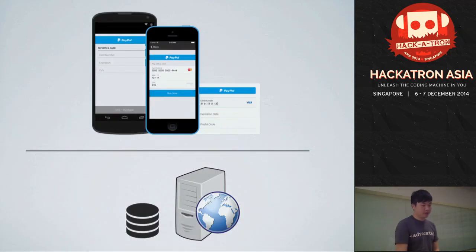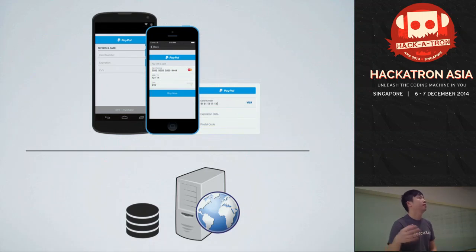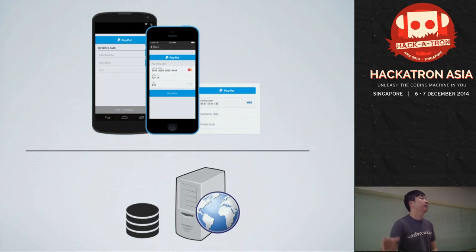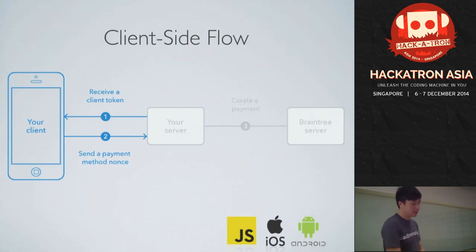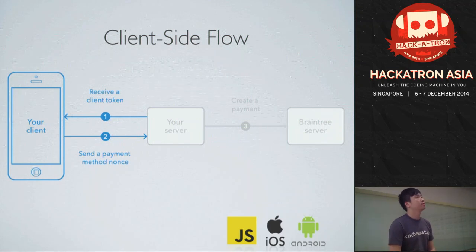You need a client application for your users and a server application to serve the client token, as well as execute actual transactions — sending transaction info to Braintree, who then takes funds from the customer account and puts them into your account. The flow starts when your client needs a client token, which is generated by the server SDK. It's similar to building applications that integrate with Facebook or Twitter.